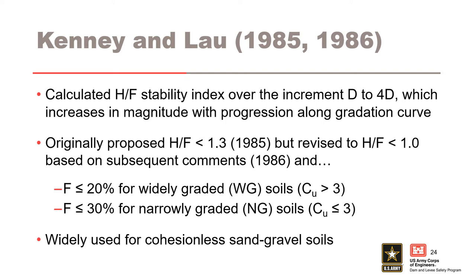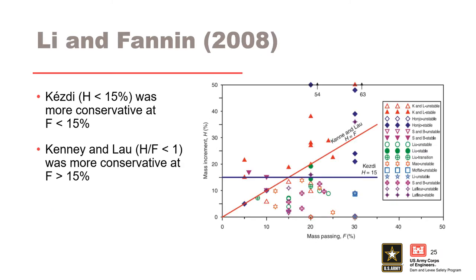Kenny and Lau calculated the H over F stability index over the increment D to 4D, which increases in magnitude with progression along the gradation curve, where H is the mass increment and F is the mass passing. They ultimately defined potentially internally unstable soils based on H over F less than 1.0 and F less than or equal to 20% for widely graded soils, or F less than or equal to 30% for narrowly graded soils. Application of the two methods to the literature database shows the two methods have mixed success in assessment of internal stability for gap graded and widely graded soils. These observations led to an investigation of combining some aspects of the two empirical methods.